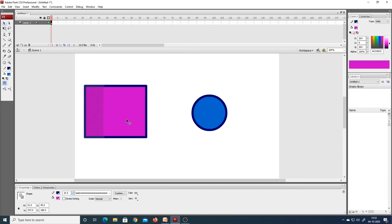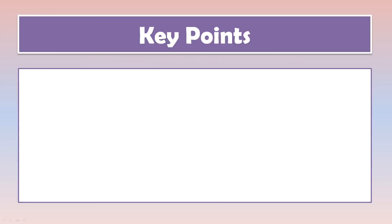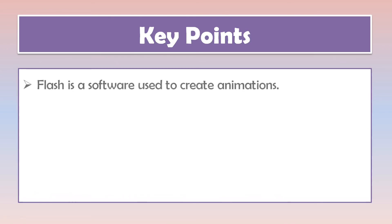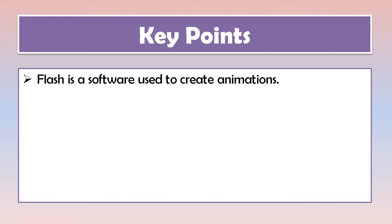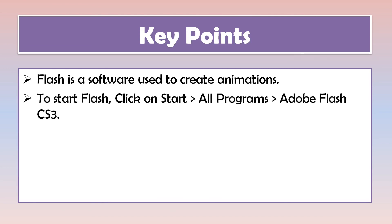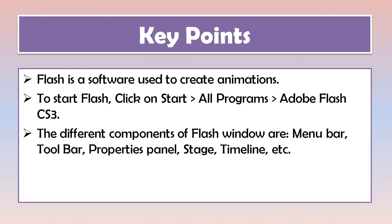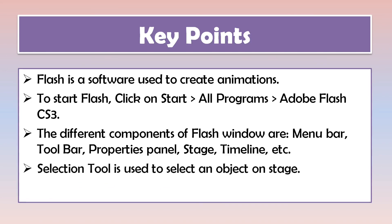So this is how you use the selection tool. Now let's quickly go through the key points of the video. First we discussed Flash — it is a software used for creating animations. After that, we discussed the steps to launch Flash: go to the start button, click on all programs, and choose Adobe Flash CS3 Professional. Then we discussed the different components of the Flash window, like the menu bar, toolbar, properties panel, stage, timeline, palettes, etc. And lastly, we made use of the selection tool to select different objects on the stage. That is it for today's video.